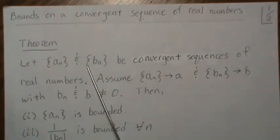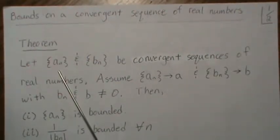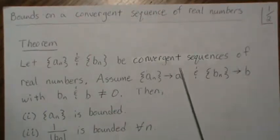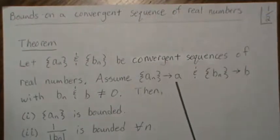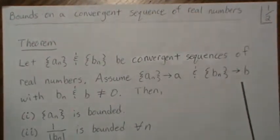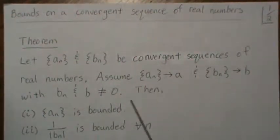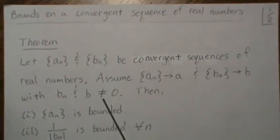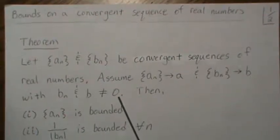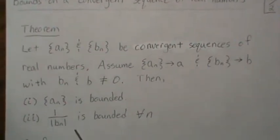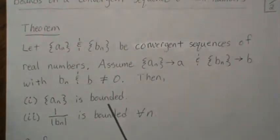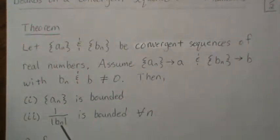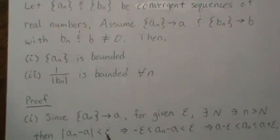So if we let An and Bn be convergent sequences of real numbers, and assume An converges to A and Bn converges to B, and Bn and B are never zero, these two statements are true: the sequence An is bounded, and 1 over the absolute value of Bn is bounded for all n.